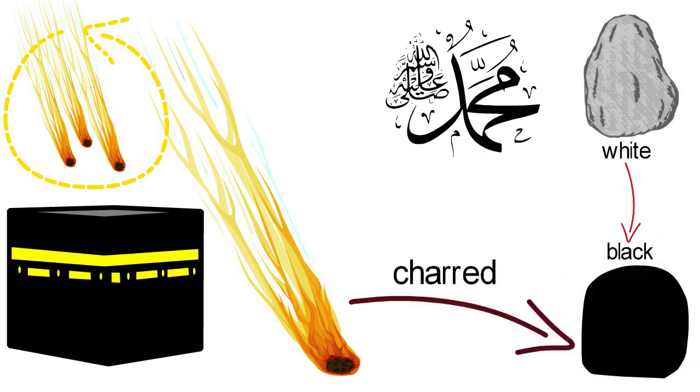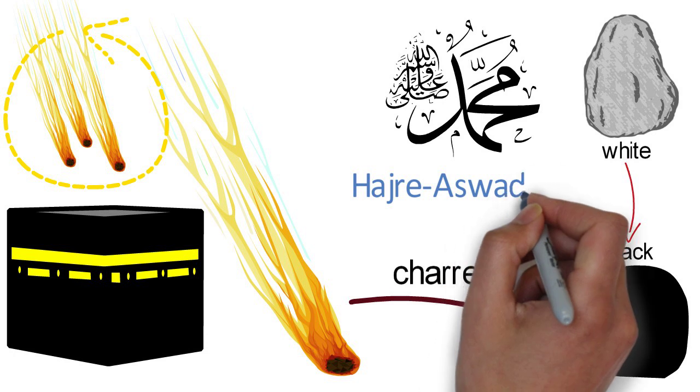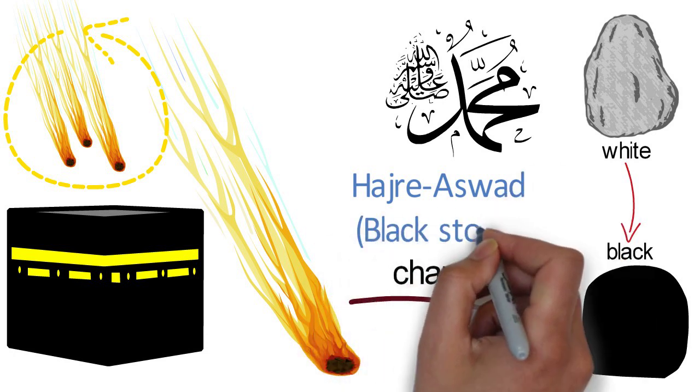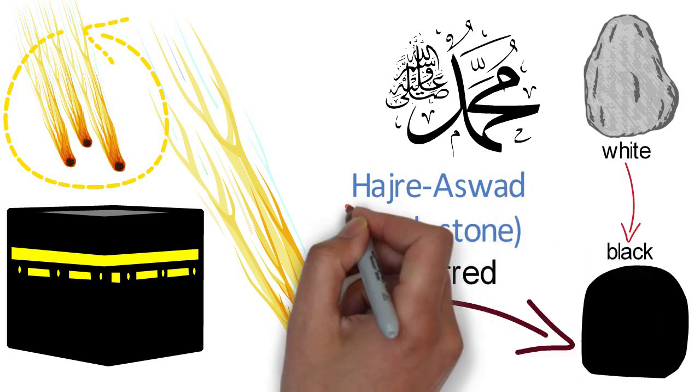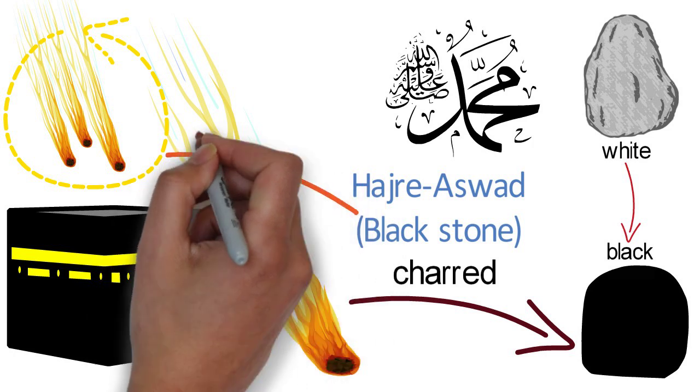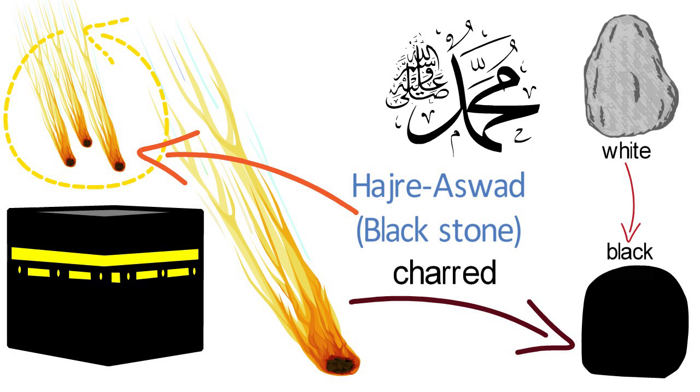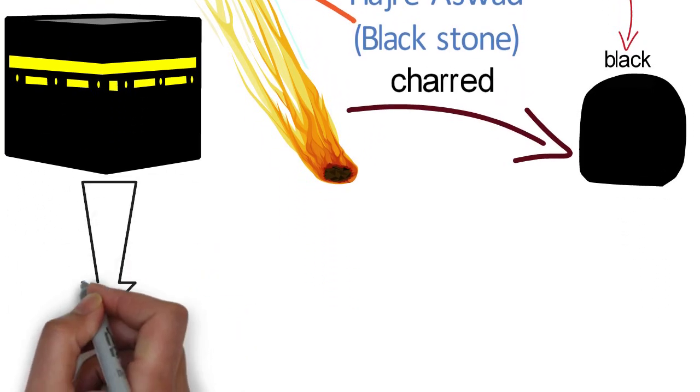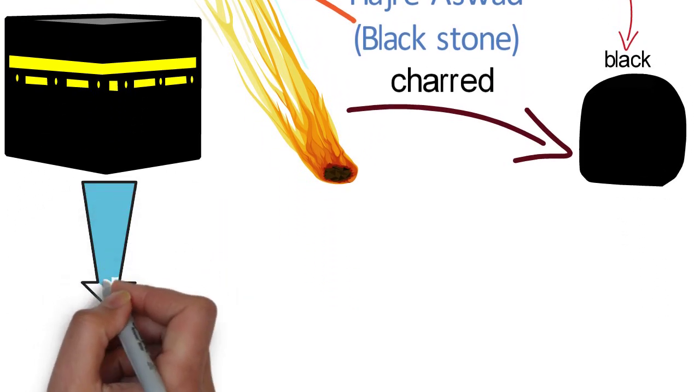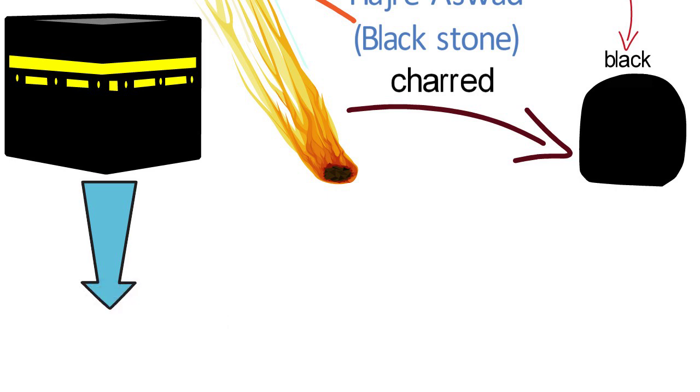So if that happened, then Hajre-Aswad is a stone or remnant of those stones which entered the earth from the outer space with the will of God. And the first man who was appointed by God to create the first house for worship used these stones.